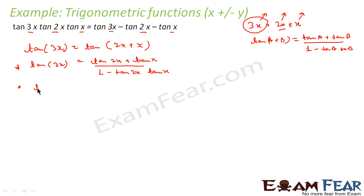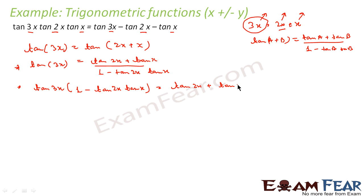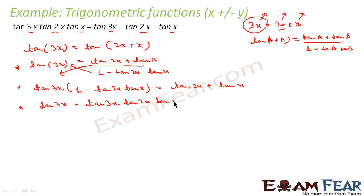Cross-multiplying: tan 3x · (1 − tan 2x · tan x) = tan 2x + tan x. Expanding the left side: tan 3x − tan 3x · tan 2x · tan x = tan 2x + tan x.